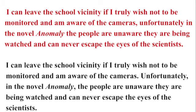When you have two independent clauses that can stand alone, you've got a couple of choices. One is you can put a comma and then use a conjunction like 'and' or 'but.' For instance, in this case the writer could have said, after 'cameras,' put 'but, unfortunately, in the novel Anomaly, the people are unaware they are being watched.' Just keep in mind you can't jam two sentences together without a conjunction. You've got two choices: put a comma and a conjunction before the second clause, or put a period and capitalize the first word of what would be the second sentence.